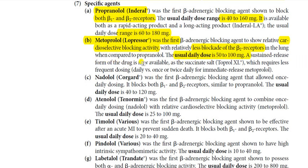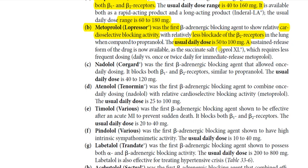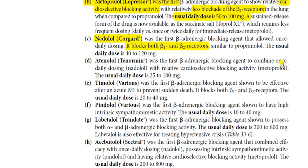A sustained-release form of metoprolol (succinate salt) is now available, requiring less frequent dosing — once daily versus once or twice daily for the immediate-release form. Nadolol was the first beta blocker to allow once-daily dosing. It blocks both beta-1 and beta-2 receptors, similar to propranolol. The usual daily dose is 40 to 120 mg.